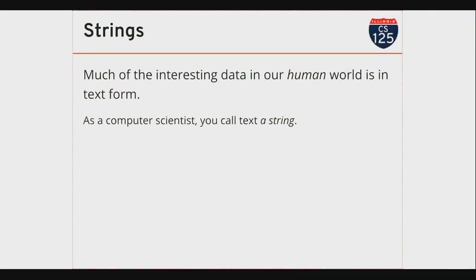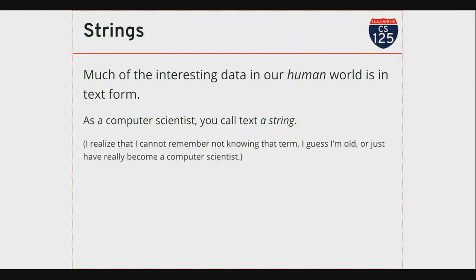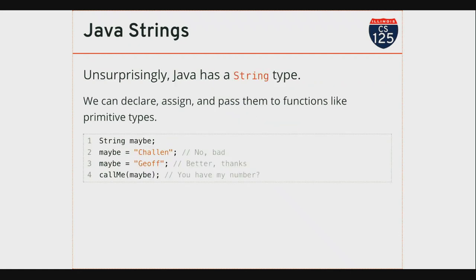A lot of the interesting data in our world is in textual form. As a computer scientist, you call this a string — that's the term you use. That's the word for a piece of computer data that consists of a series of characters. In Java, there is a way to work with strings. But there's already a type in Java for working with a series of characters — we've already talked about this. Why not just use an array of characters?